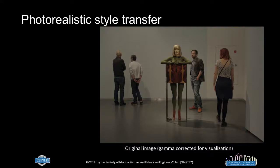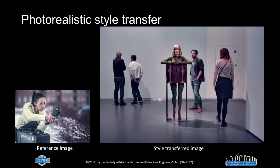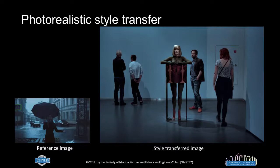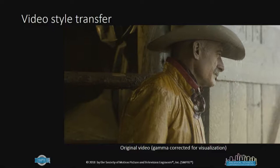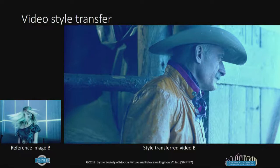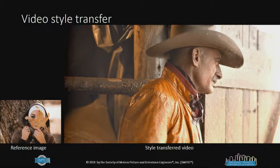Now I'll show some results for still images and video. For a single frame, this is our original image — gamma corrected for visualization purposes — and on the right we have the reference image. This is the resulting image. With different references, we get different results. For video, this is one of the source videos, with the reference image on the left and the different results shown.